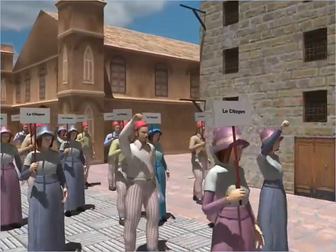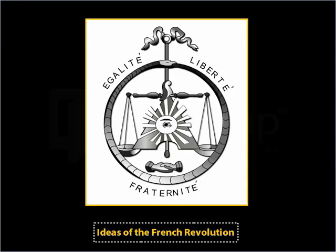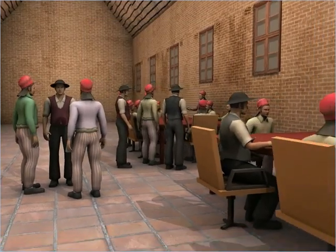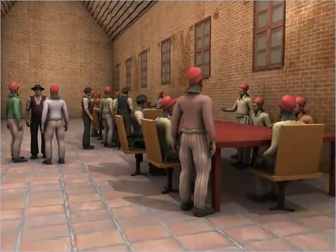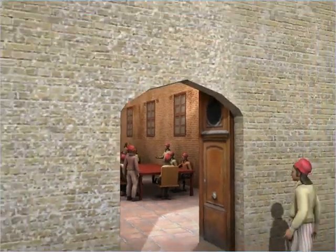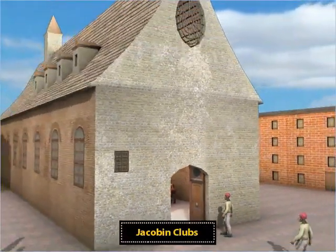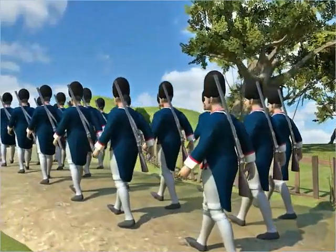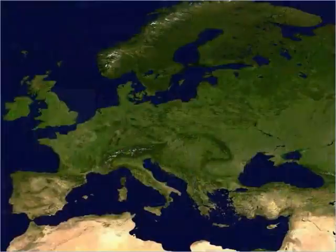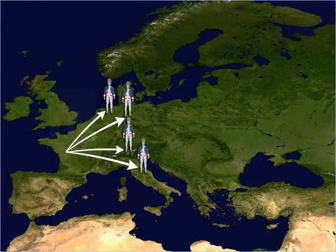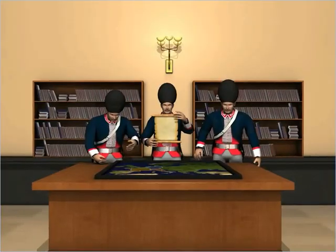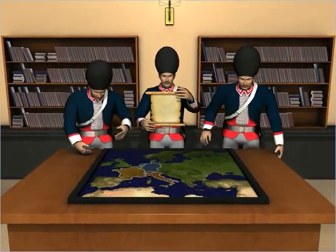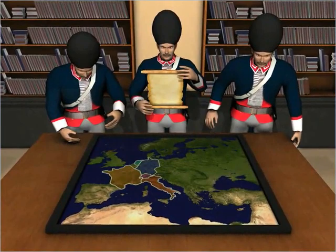As the ideas of the French Revolution spread across Europe, many students and educated members of the middle class who were inspired by these events began setting up Jacobin clubs all over Europe. The activities of these clubs paved the way for French armies to move into other European states and spread nationalist ideas. In the invaded states, the French army also carried out many administrative reforms.